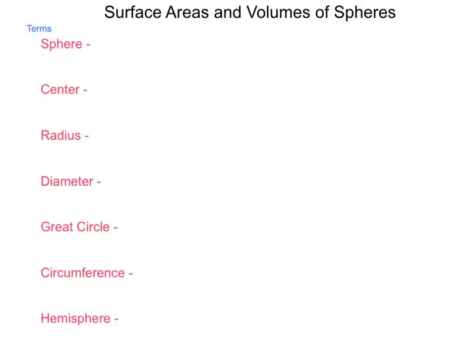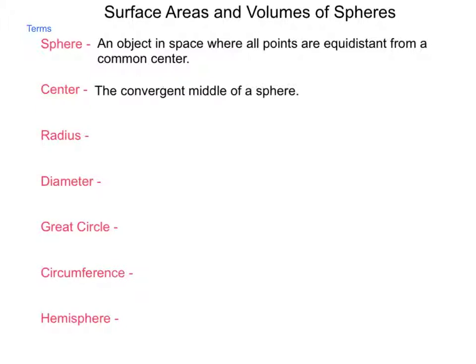First of all, what is a sphere? A sphere is an object in space where all points are equidistant from a common center. Next, what is a center? It is defined as the convergent middle of a sphere.